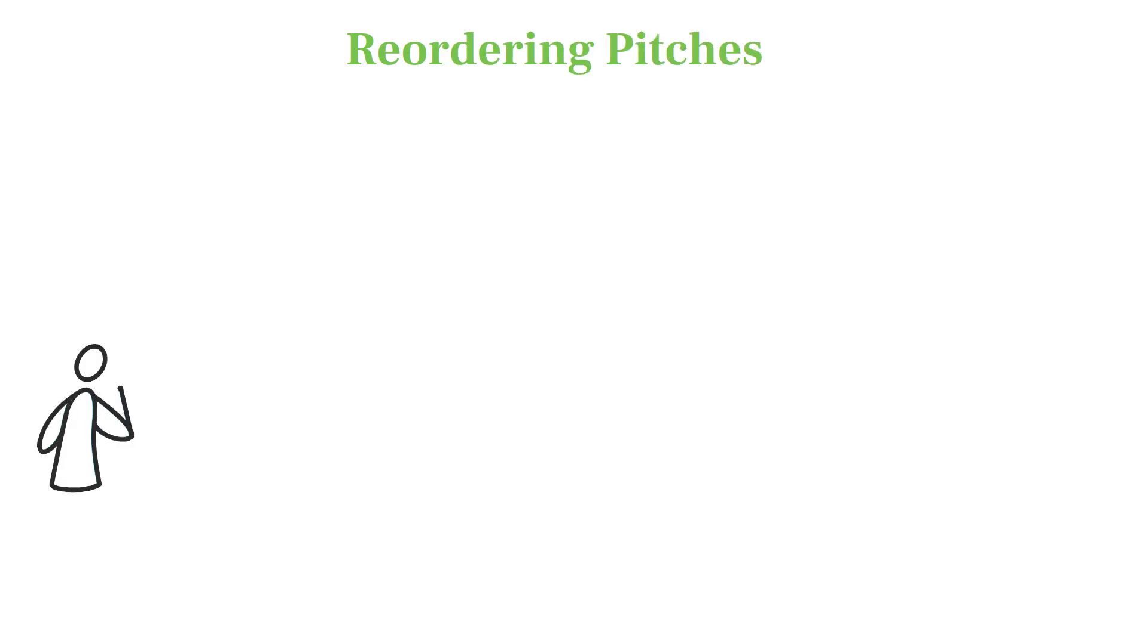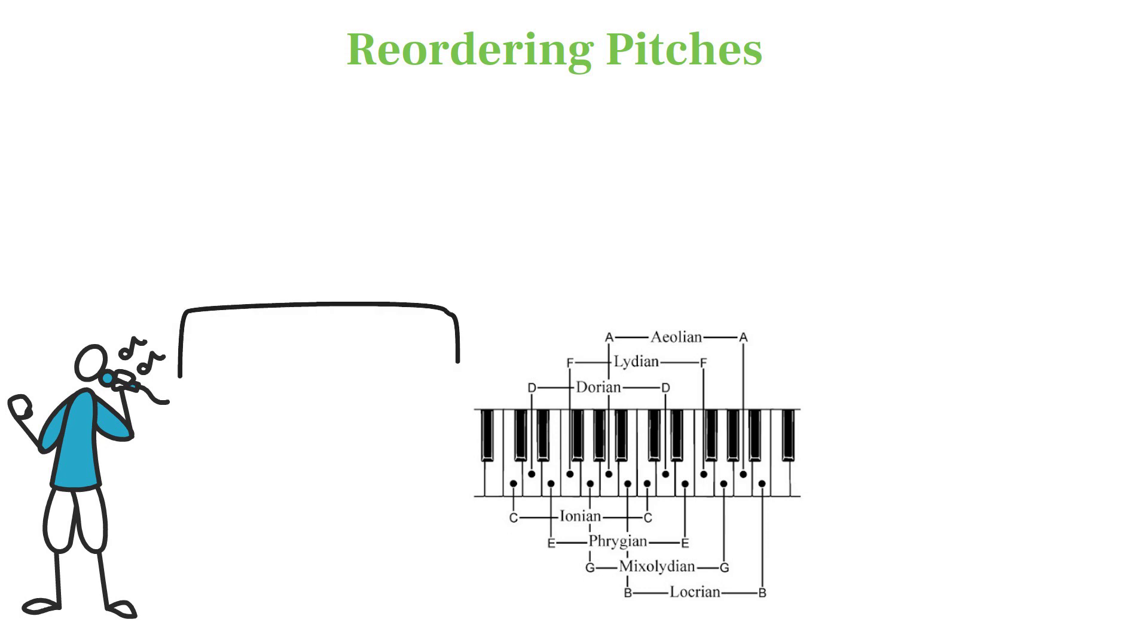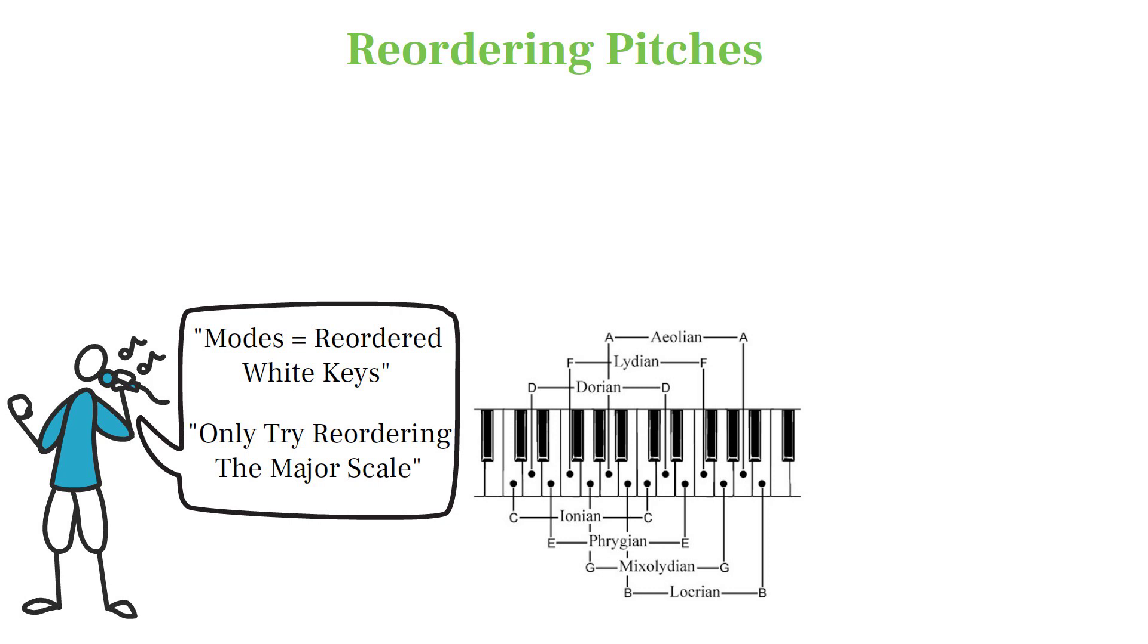Did your music teacher just tell you that the white key starting on D is Dorian, and the white key starting on E is Phrygian, and you only ever heard of modes in the context of the major scale? This is a problem in music theory education. Not only do plenty of other chords and scales have modes aside from the major scale, but this view doesn't help us understand the differences between each mode.